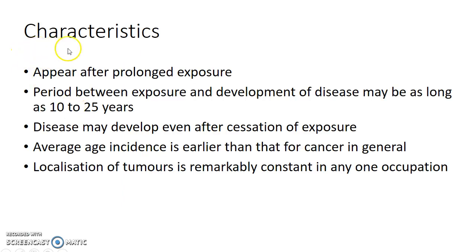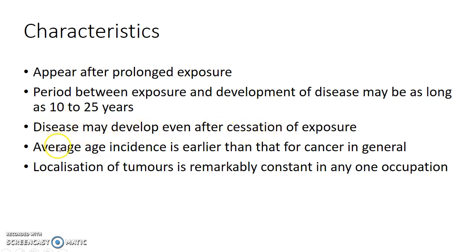What are the characteristics of occupational cancers? Occupational cancers appear after prolonged exposure. The period between exposure and development of disease may be as long as 10 to 25 years. The disease may develop even after cessation of exposure. The average age of incidence is earlier than that for cancer in general. The localization of tumors is remarkably constant in any one occupation.